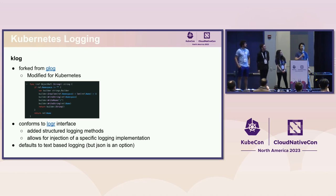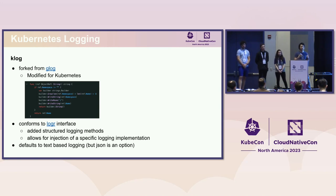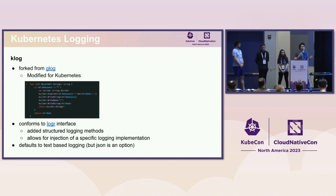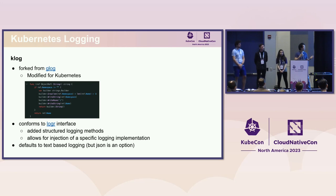Klog also conforms to the logr interface. For those who don't know logr, it is a side project by Tim Hockin to introduce a log API. What this does is it decouples the implementation of the log from the writing of the log — it's essentially an API over loggers. The reason for this is that the people who write logs are often different from the people who consume them. Kubernetes developers write these logs during development, while cluster administrators care about ingesting logs to debug their cluster.